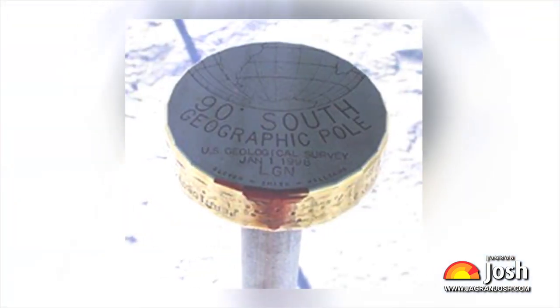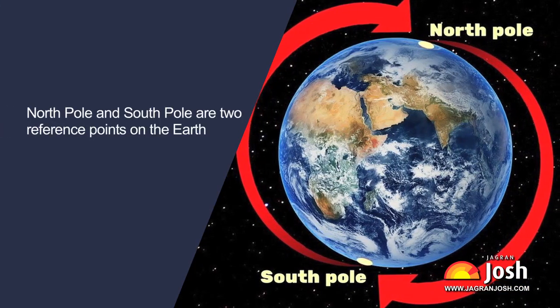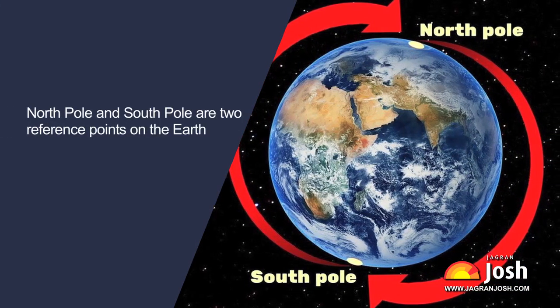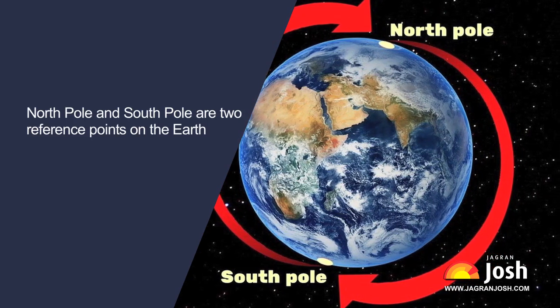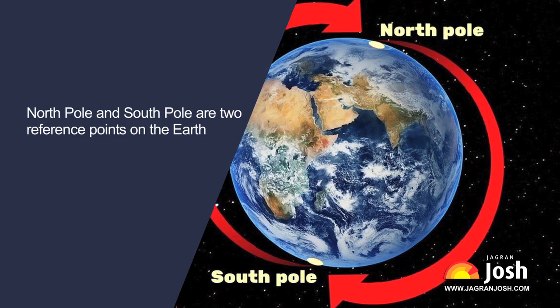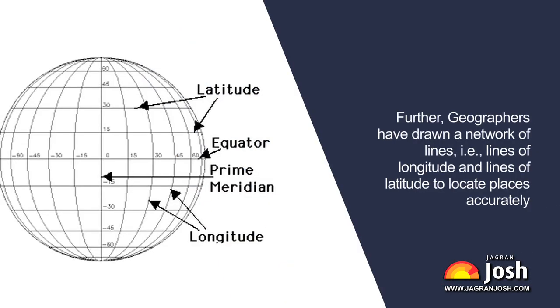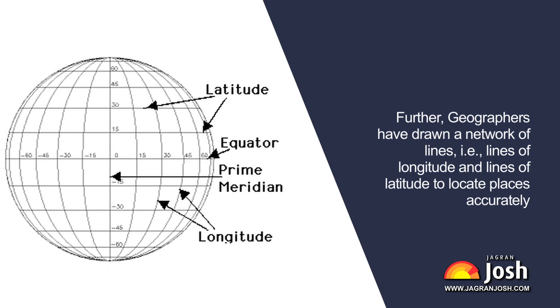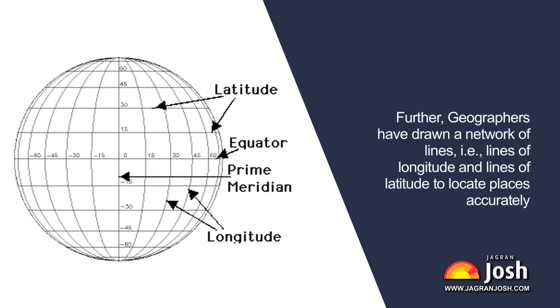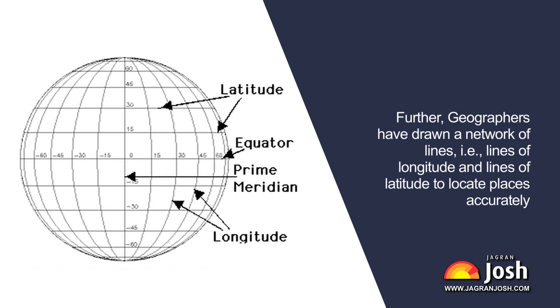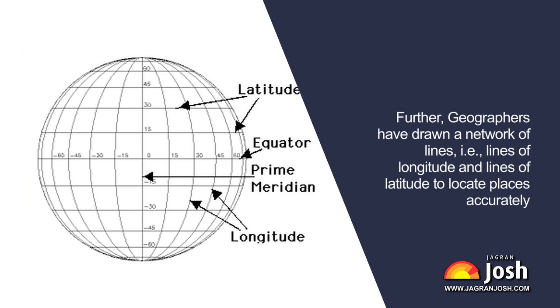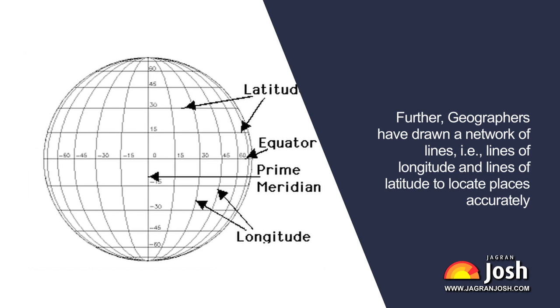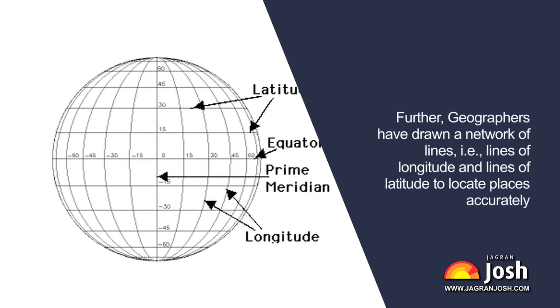But before we get to that, let's understand a few basics. How are places located on the earth? The North Pole and South Pole are two reference points on the earth, and with these two points, a line is drawn which lies exactly midway between the poles and is known as the equator. Further, geographers have drawn a network of lines — lines of longitude and lines of latitude — to locate places accurately. These lines intersect each other at right angles and create a network known as a grid or graticule, which helps us accurately locate places on the surface of the earth.